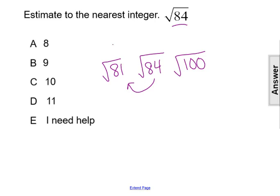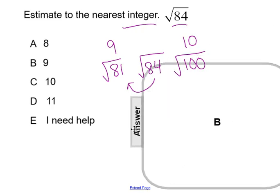So it is going to be much closer to 9 than it is to 10. So if we want to estimate to that nearest integer of 9 or 10, the square root of 84 is going to be approximately 9.